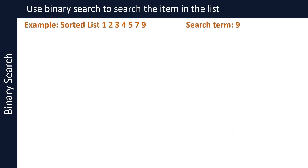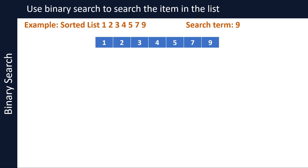Let's take an example and apply the steps in the binary search algorithm. Imagine you have been given a sorted list of numbers 1, 2, 3, 4, 5, 7, and 9 that you can see on your screen, and you need to search for number 9 in that list. Now let's work through the steps in the algorithm. Compare the middle item in the list, 7, with 9, which is the value we are searching for, or in other words, the search term.